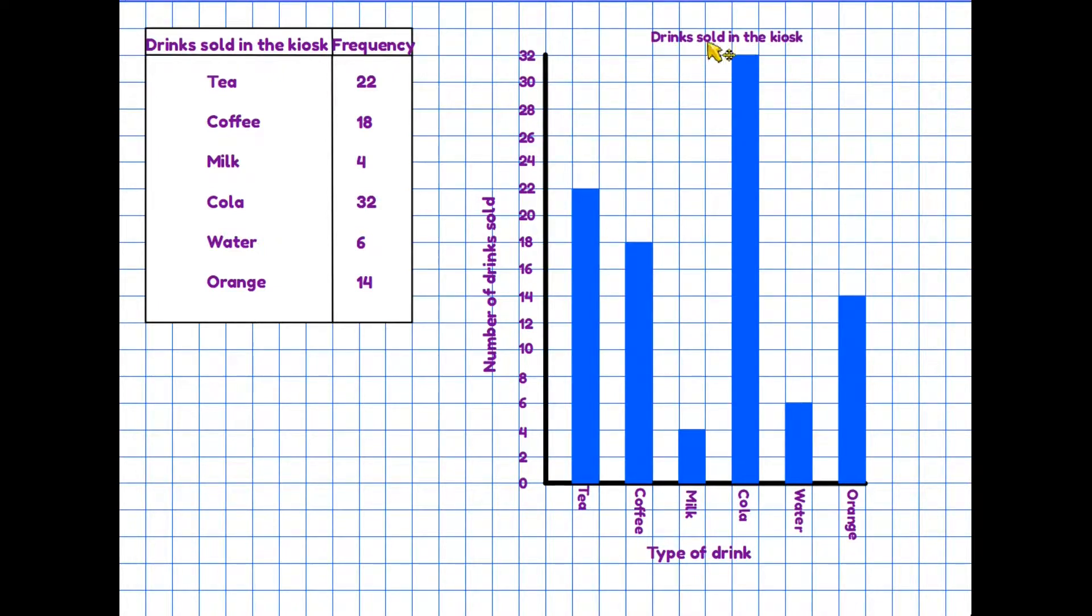First of all it does have a title - we know it's about drinks sold in the kiosk. We have a label along the bottom telling us about the type of drink and also each of the drinks has its own small label. Going up the side we are told that the number of drinks sold is being represented and indeed we have the numbers to show us how many of each drink. These numbers then are the frequency. The bar chart has bars which are all the same width and they have a space between them. We can therefore look for instance at tea - how many teas were sold at the kiosk? Read across from the top of the bar chart, it tells us 22. Coffee is 18, and so on. So a perfectly good bar chart.